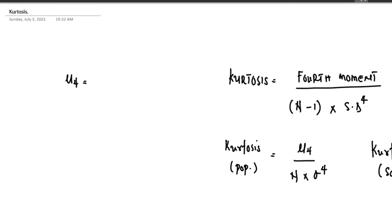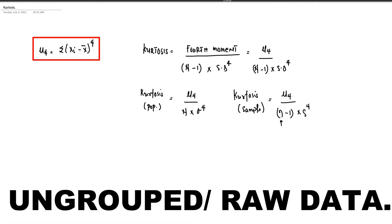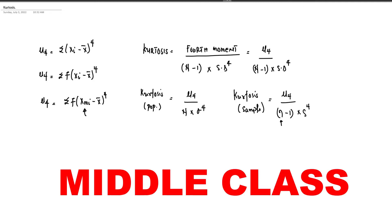The formula for the fourth moment mu4 equals the summation of (xi minus x-bar) raised to the power of four. This formula is used for ungrouped data. For grouped data based on score, mu4 equals summation of f times (xi minus x-bar) raised to the power of four. For grouped data based on class, mu4 equals summation of f times (x_mi minus x-bar) raised to the power of four, where x_mi represents the midpoint of each class.